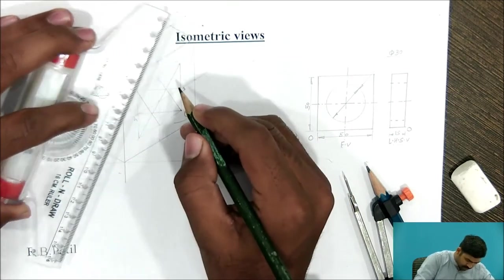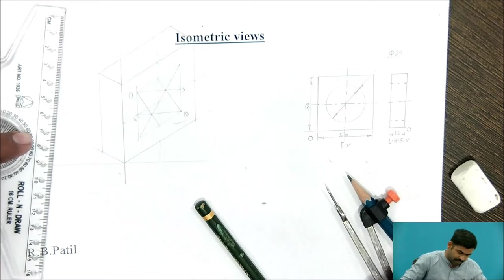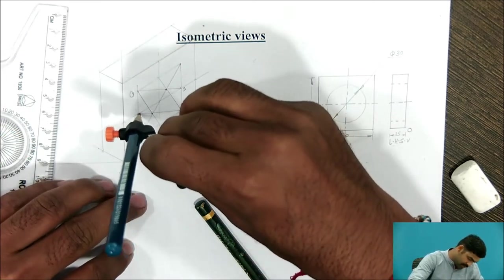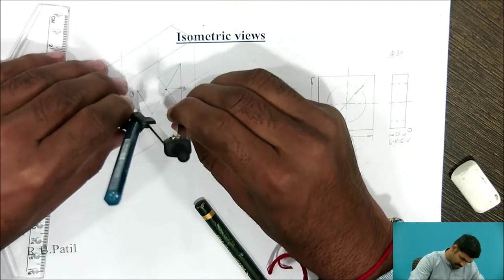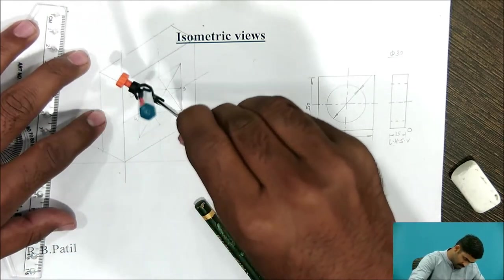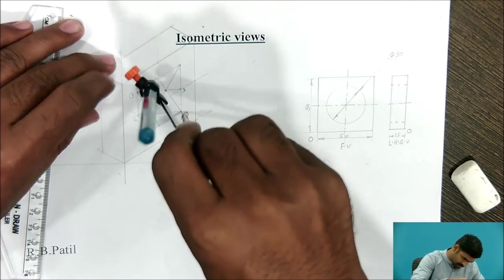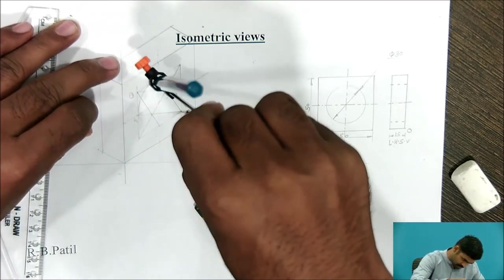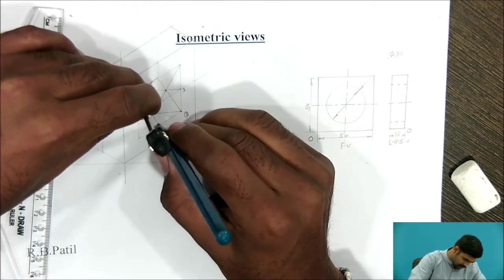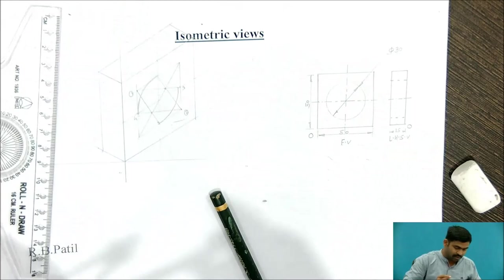Draw this diagonal, where the intersection point, this is centre number 3 and this is centre number 4. Now, take from centre, this much radius in compass. Similar way, from this, draw it.